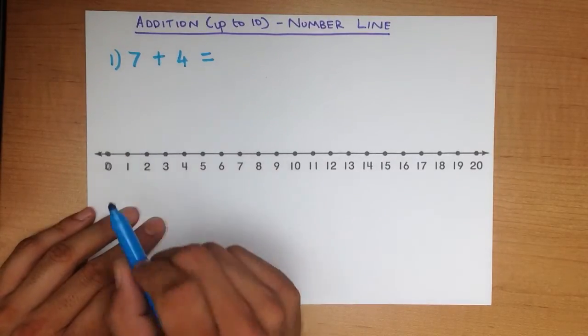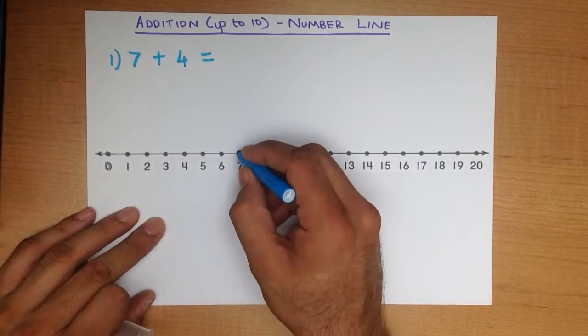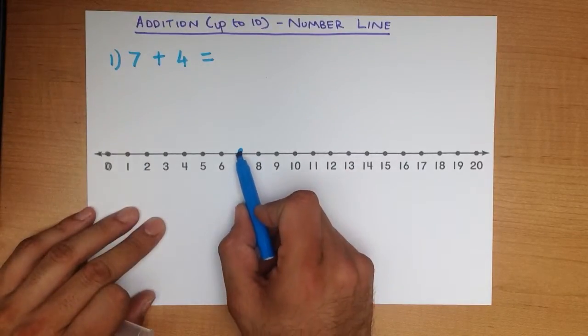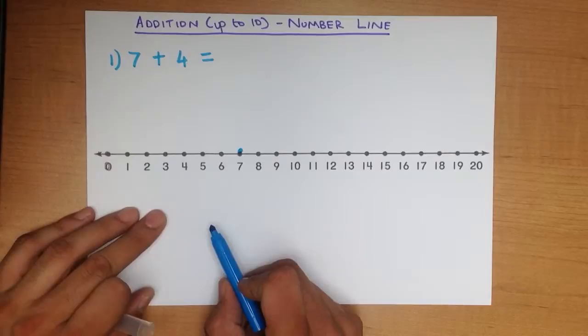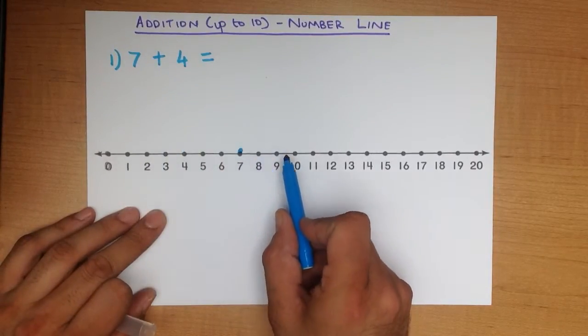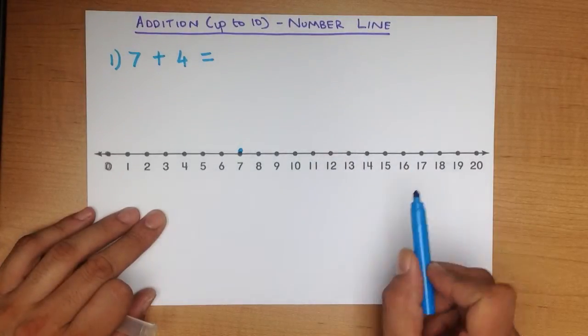What we do is find number 7. We're starting here. There it is, number 7. I've just put a blue dot above it. Now, we are adding, therefore we are going forward. We're going to go jumping forward.